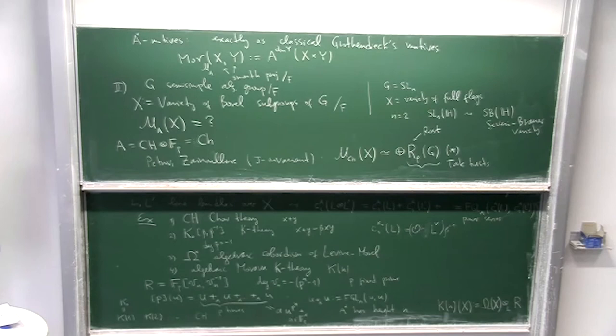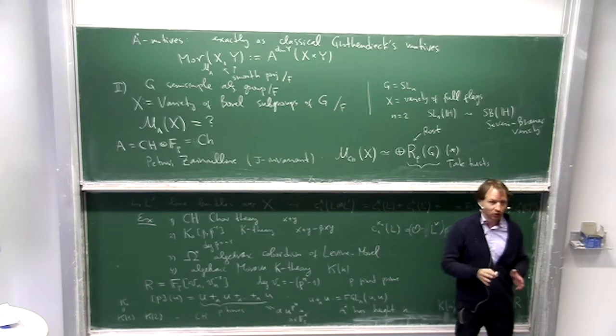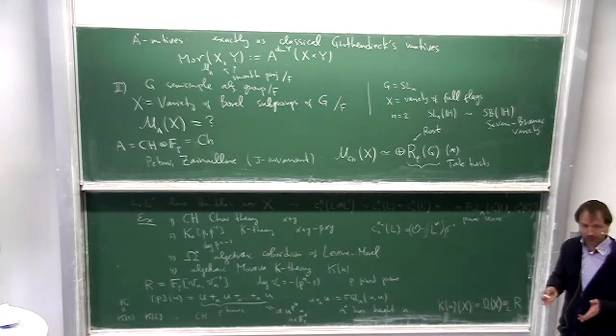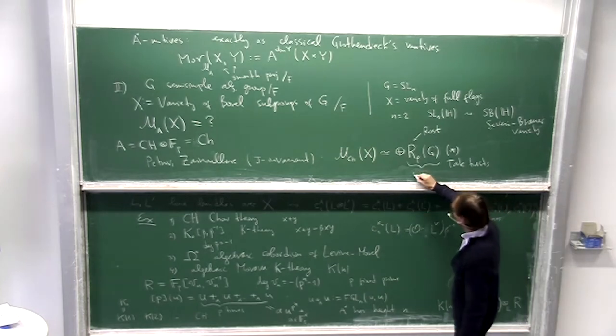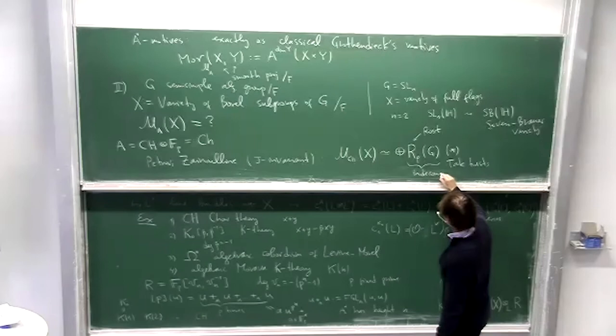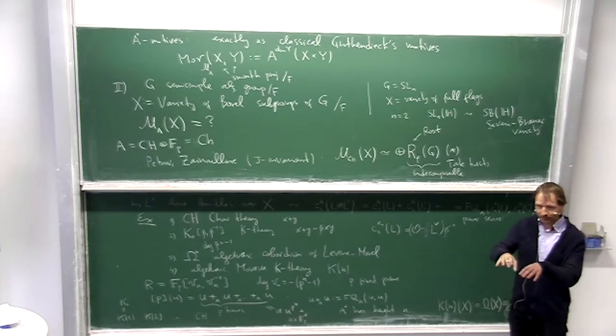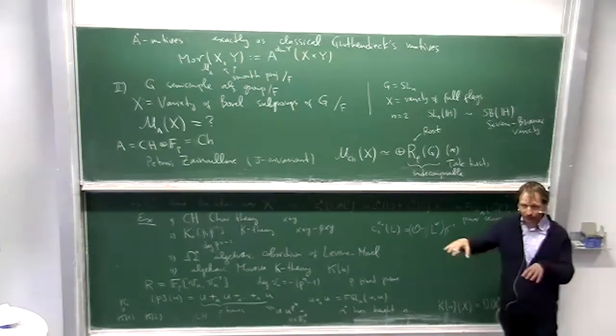And this is some sort of generalized version. In some special cases you get the usual Rost motives from the proof of the Milnor conjecture. So they're indecomposable. When you see the remarkable thing: it's the same motive, there's only one type of direct summand, indecomposable direct summand.